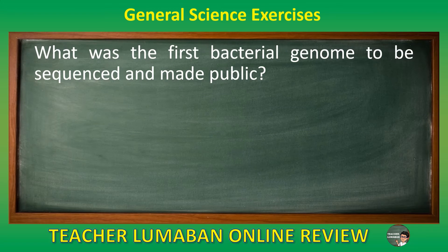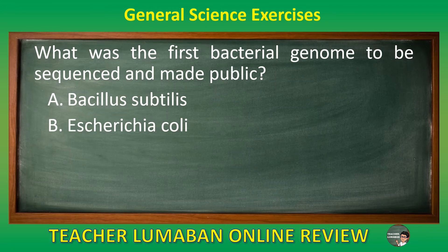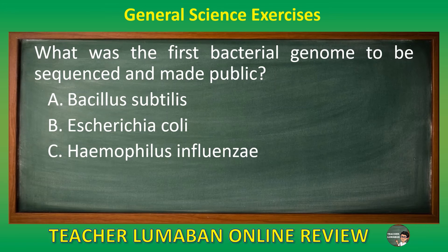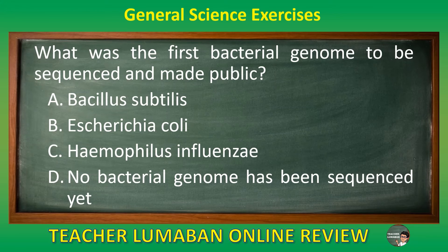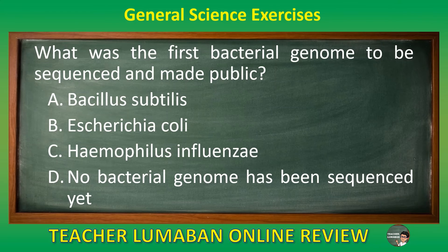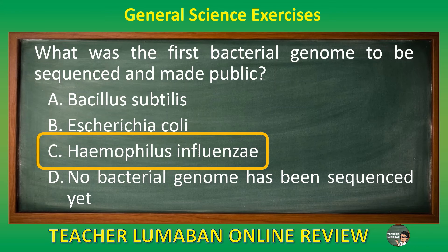What was the first bacterial genome to be sequenced and made public? Letter A Bacillus subtilis. Letter B Escherichia coli. Letter C Haemophilus influenzae. Letter D no bacterial genome has been sequenced yet. The correct answer is letter C, Haemophilus influenzae. The first bacterial genome to be sequenced and made public is Haemophilus influenzae.